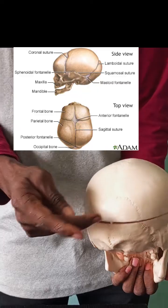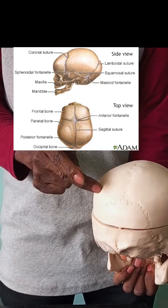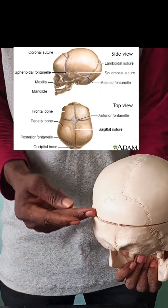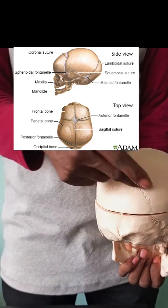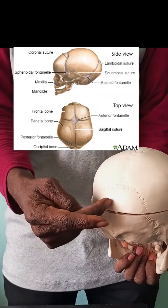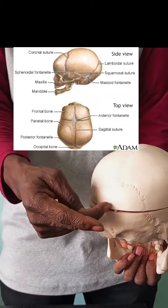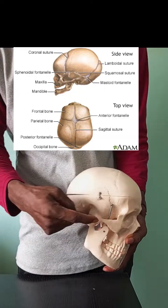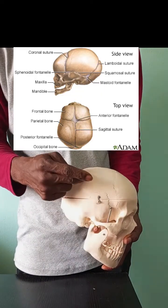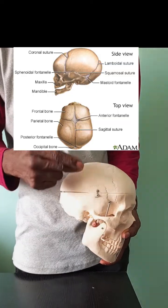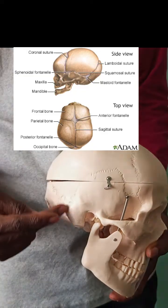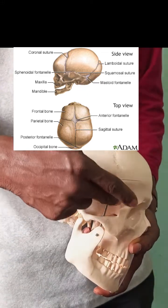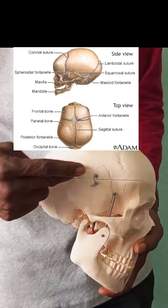Now, remember we said this is the occipital bone and this is the parietal bone. The suture that holds the occipital bone to the two parietal bones is called the lambdoid suture — some people call it lambdoidal suture. This is occipital, this is parietal — the suture that holds the parietal to the occipital is called the lambdoid suture. Remember we said this is temporal and this is parietal. The suture that holds the temporal to the parietal is called the squamous suture.